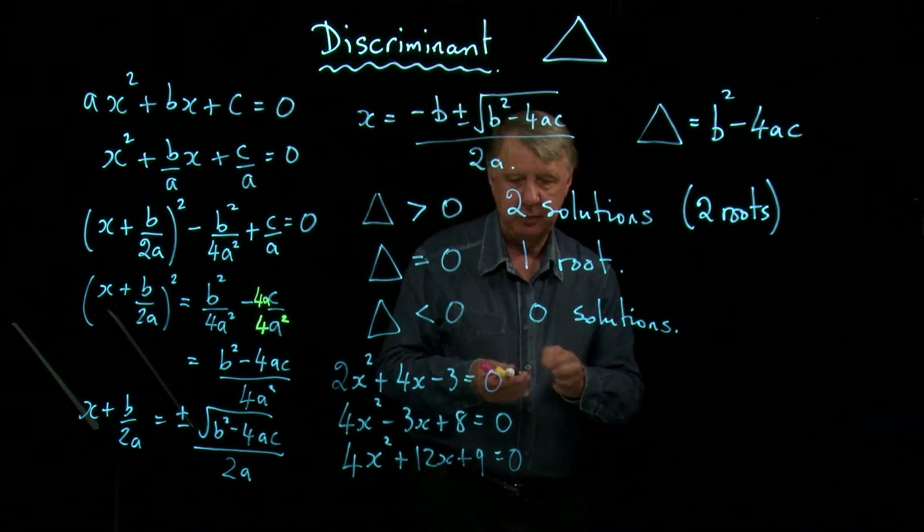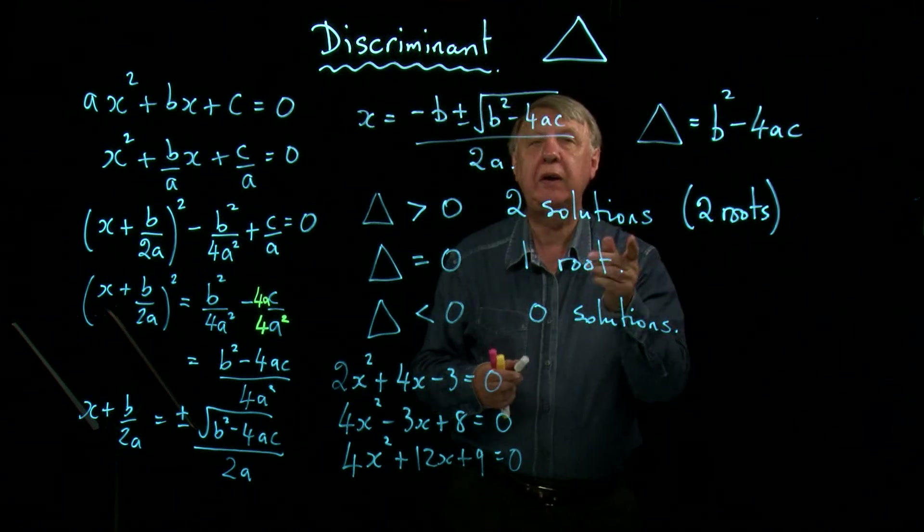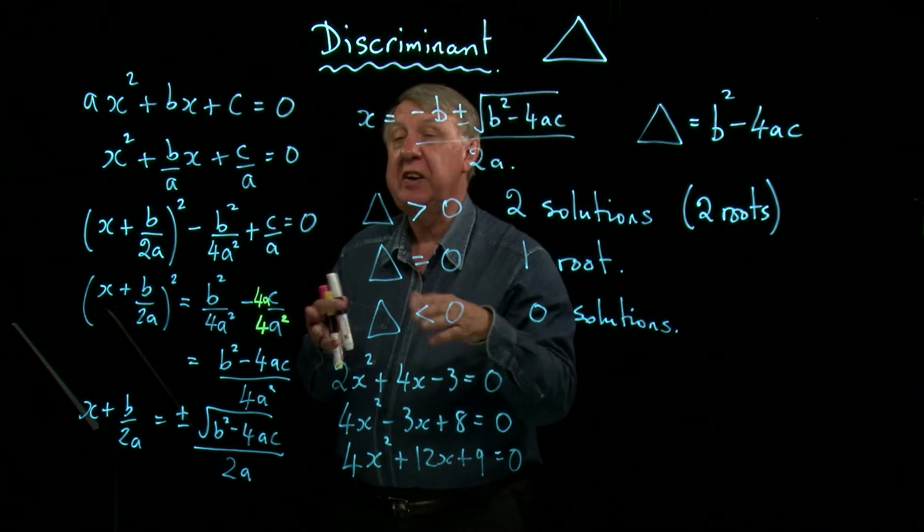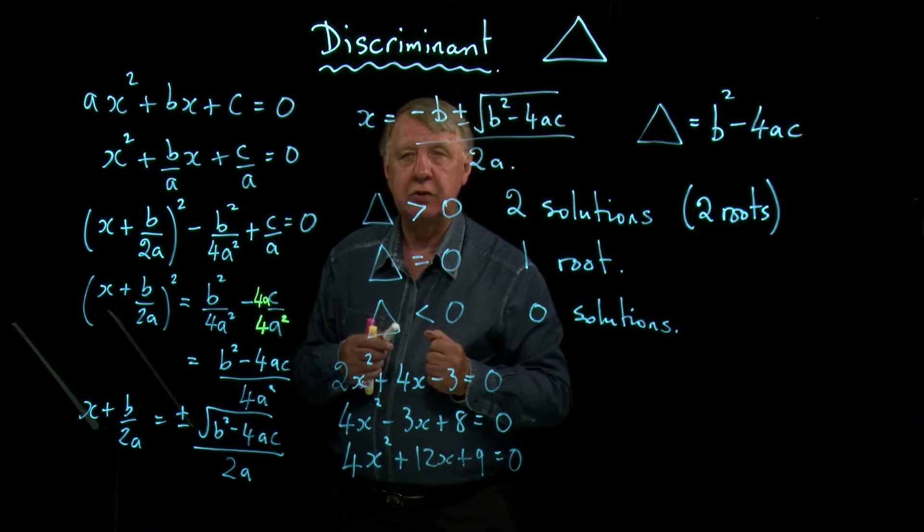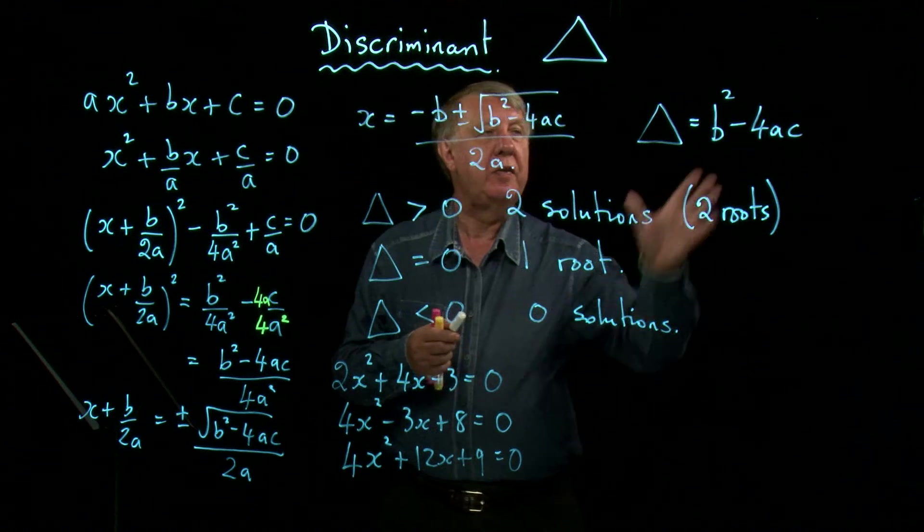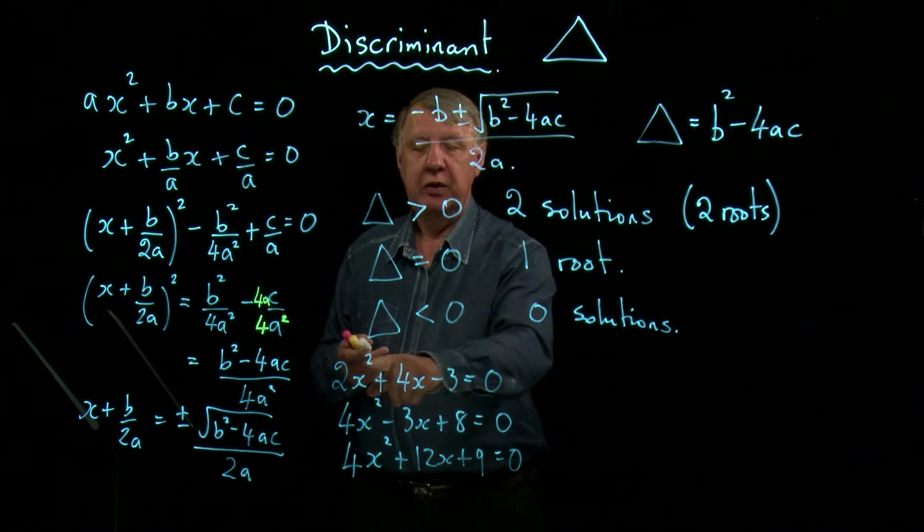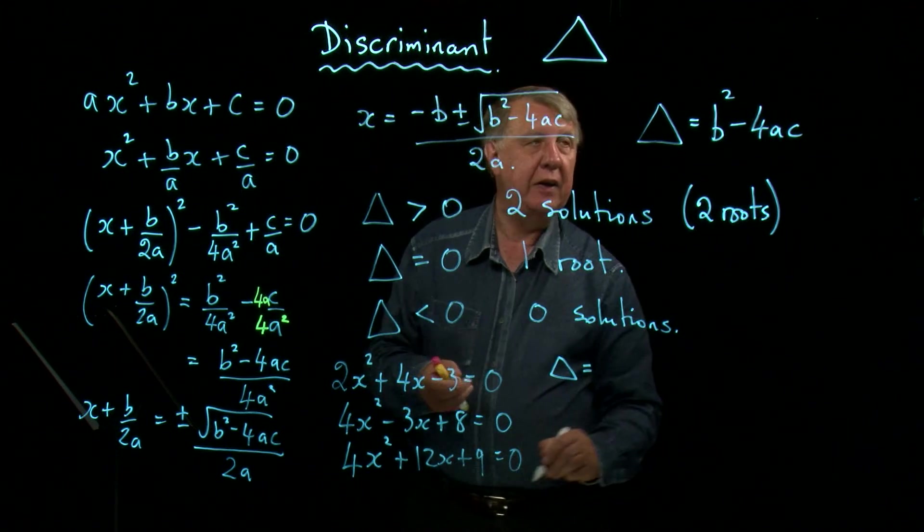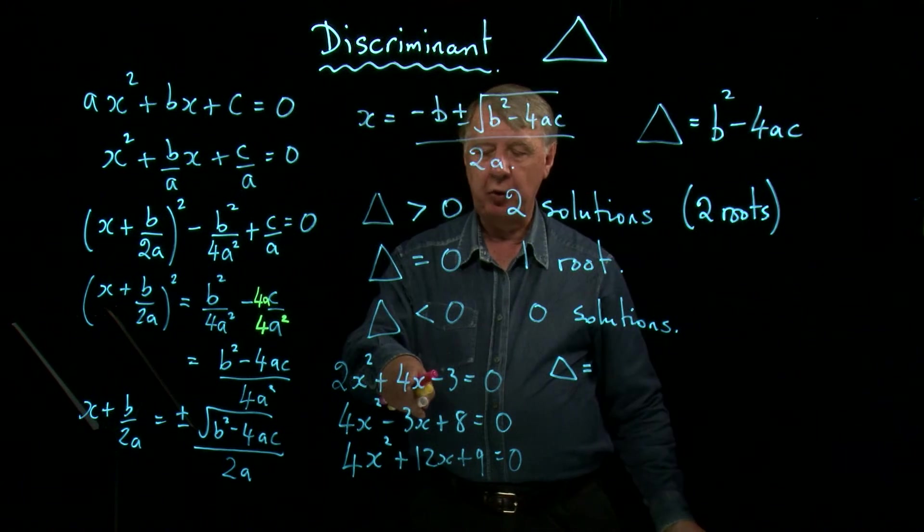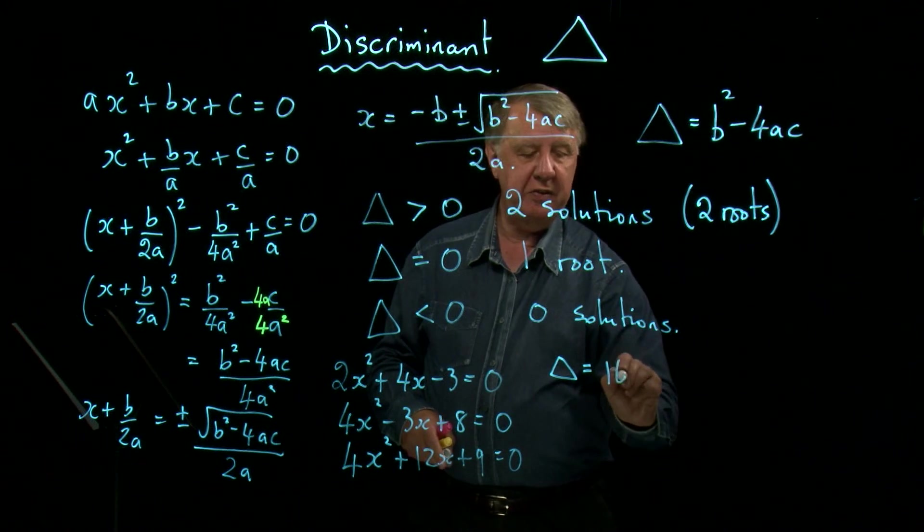So if I was given those equations, how quickly could you tell me whether there are any solutions at all? Whether there was one solution or whether there were two solutions? Well now we have a method, the discriminant. So let's work out the discriminant. So for the first one, the discriminant is b squared. b is 4. 4 squared is 16.